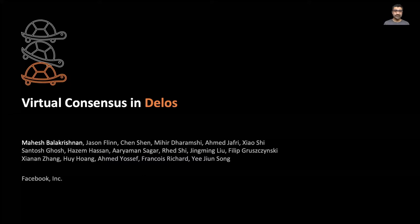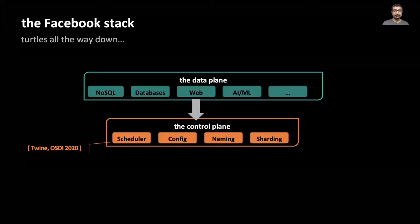Hi, my name is Mahesh Balakrishnan and I'd like to talk to you today about Delos, a new storage system that my colleagues and I built at Facebook. The Facebook software stack consists of two different layers. On the top you have a data plane which consists of services that store and process large amounts of data, and below that you have a control plane which consists of infrastructural services that support the data plane with functionalities such as scheduling, configuration, naming and so on.